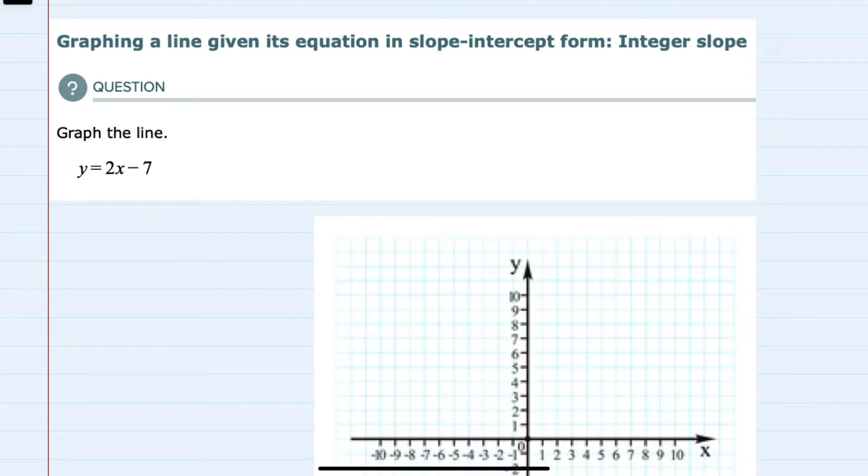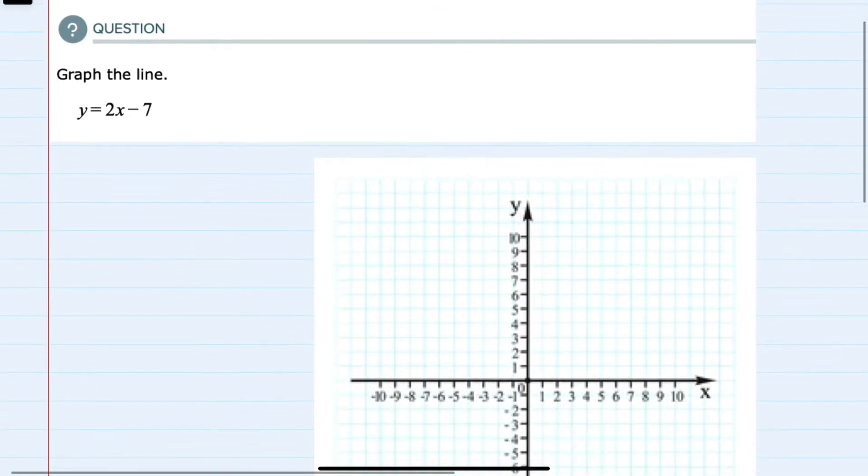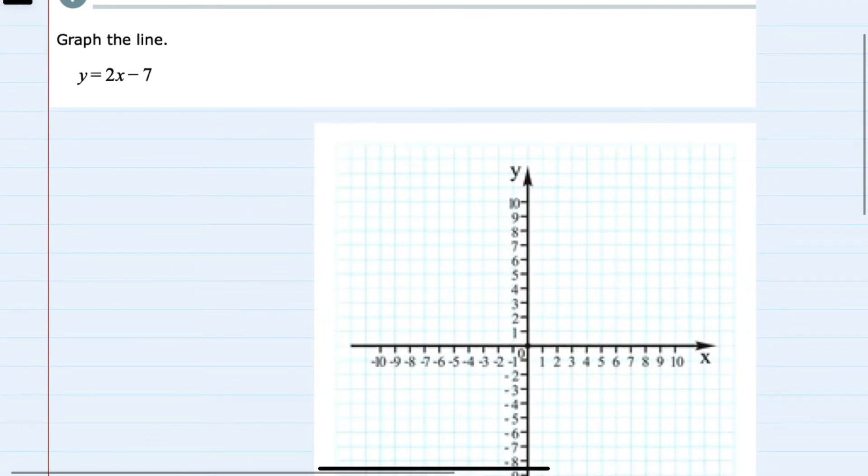In this video I'll be helping you with the Alex problem type called graphing a line given its equation in slope-intercept form with an integer slope. The line we're graphing here is y equals 2x minus 7, which is in slope-intercept form, y equals mx plus b.